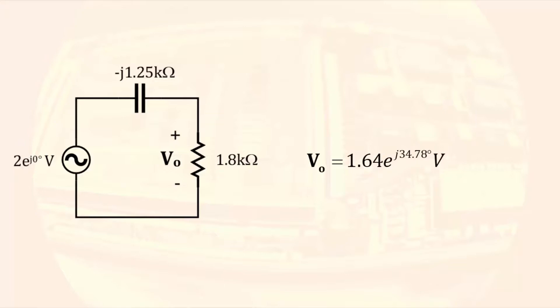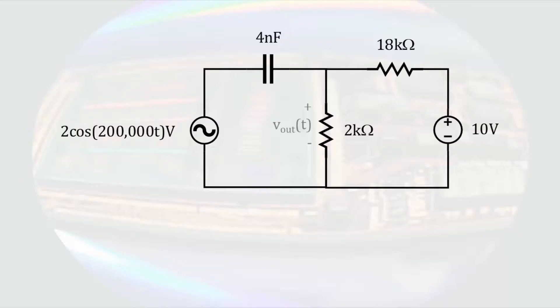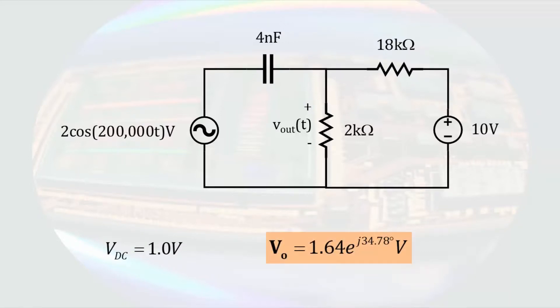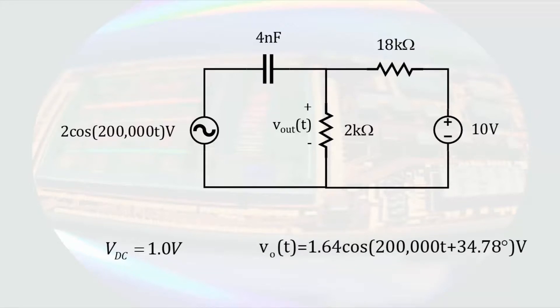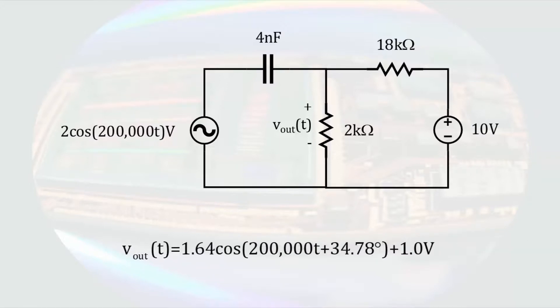The original problem was to determine the time-dependent voltage across the 2 kilohm resistor. At this point we have a DC voltage and a phasor voltage. We must convert the phasor voltage back to the time domain. That is done by taking the magnitude and the phase angle and inserting them into the cosine function with the angular frequency of the source. To express this as a single voltage, we simply express it as the sum of the sinusoidal and DC voltages. This signal represents a sinusoid with a DC offset.